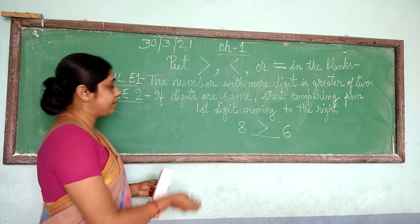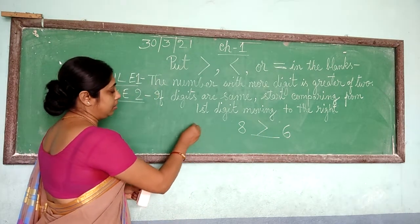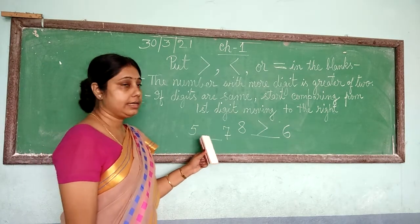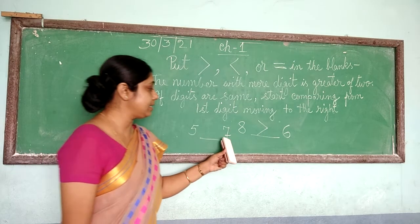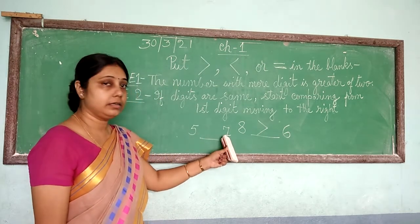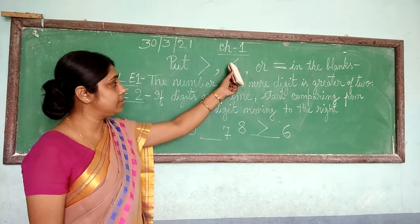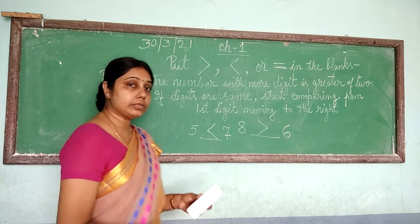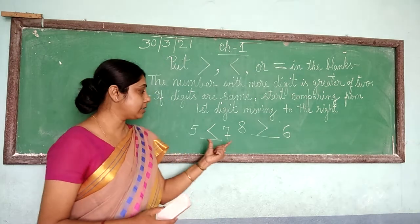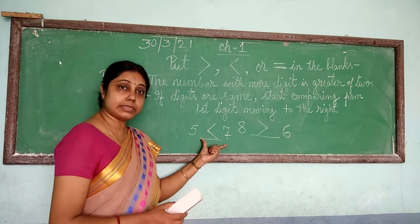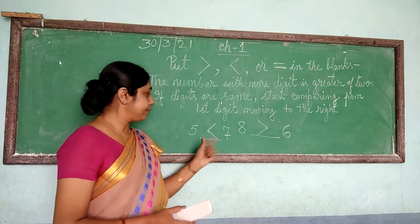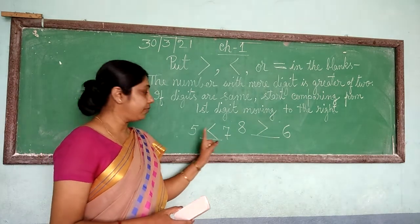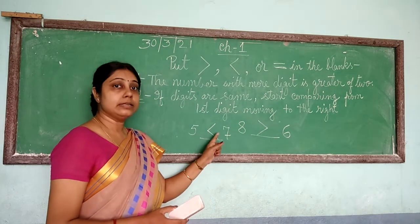Now suppose I am giving you another question. What sign will you put here? This side is 5 and this side is 7. Here 7 is greater, so you have to put the less than sign. Now how should you read it? If I ask what is written on the board, you will say: 5 is less than 7.